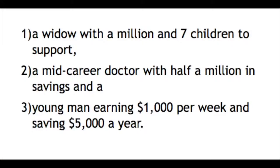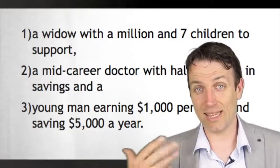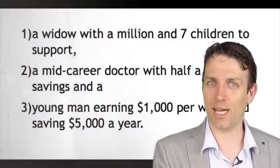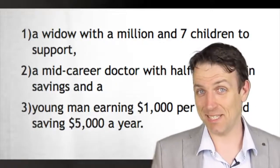Graham gives three excellent examples regarding the investor's personal situation. A widow with a million in stocks and seven children to support, a mid-career doctor with half a million in savings, and a young man earning $1,000 per week and saving $5,000 per year. For the widow, the prescription is clear: conservativeness with an allocation of 75% bonds to 25% stocks, depending on relative valuations. For the doctor, Graham says the same applies — doctors like to get involved in the stock market but don't have the time to be aggressive investors.